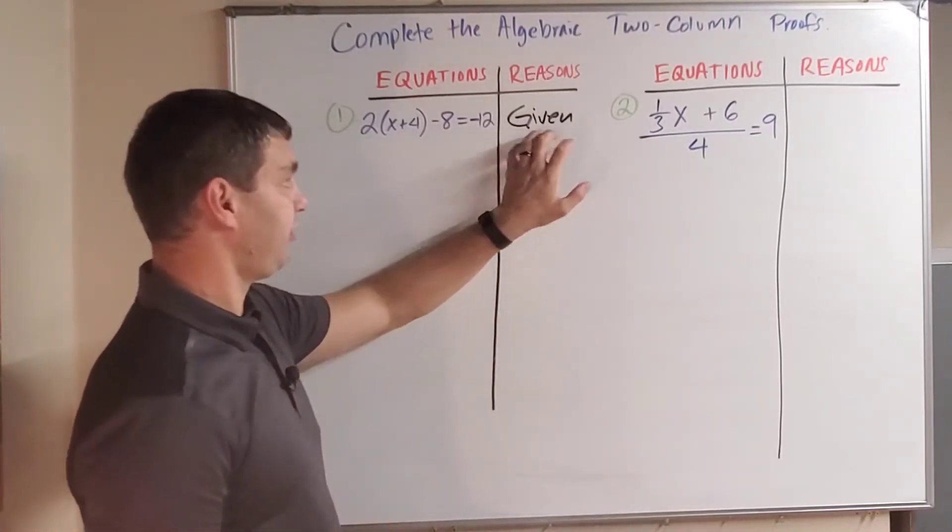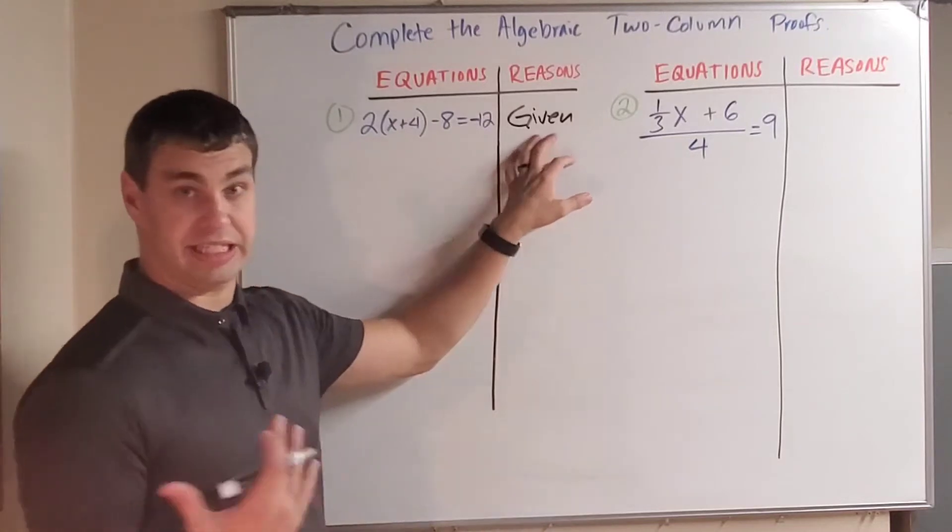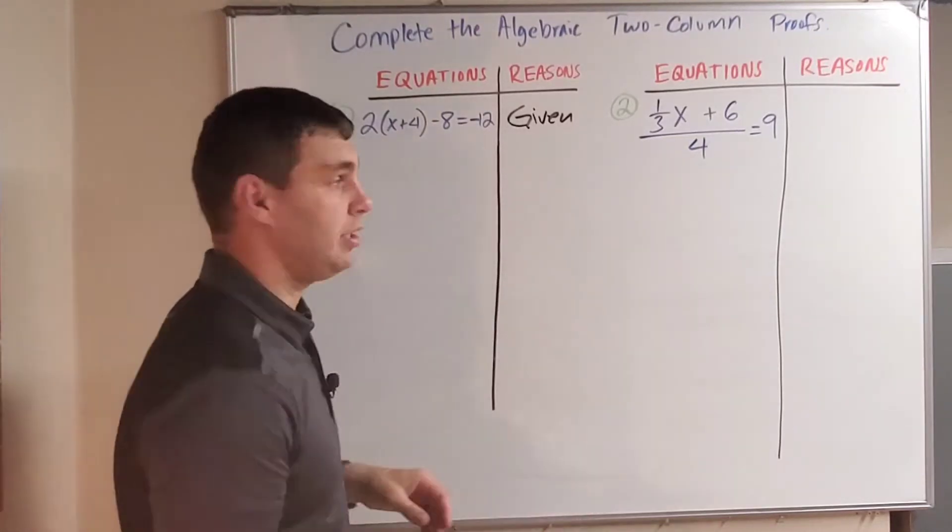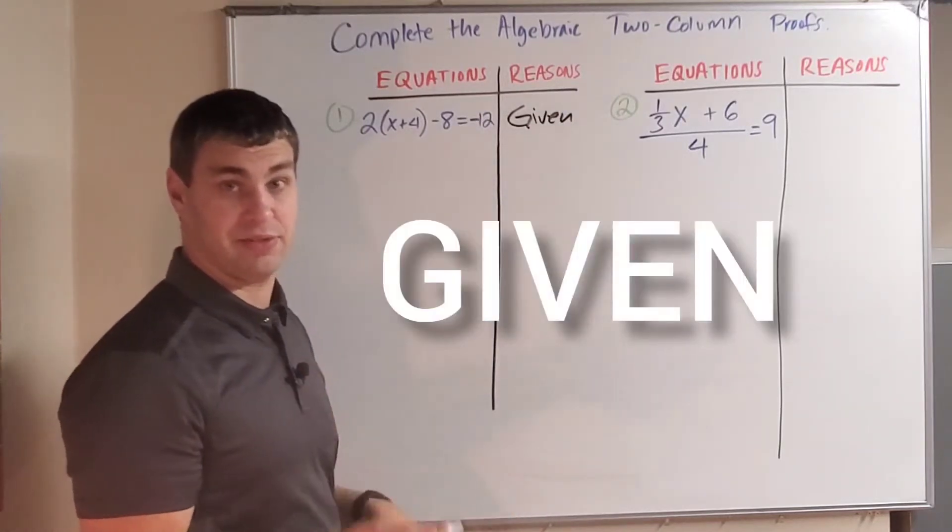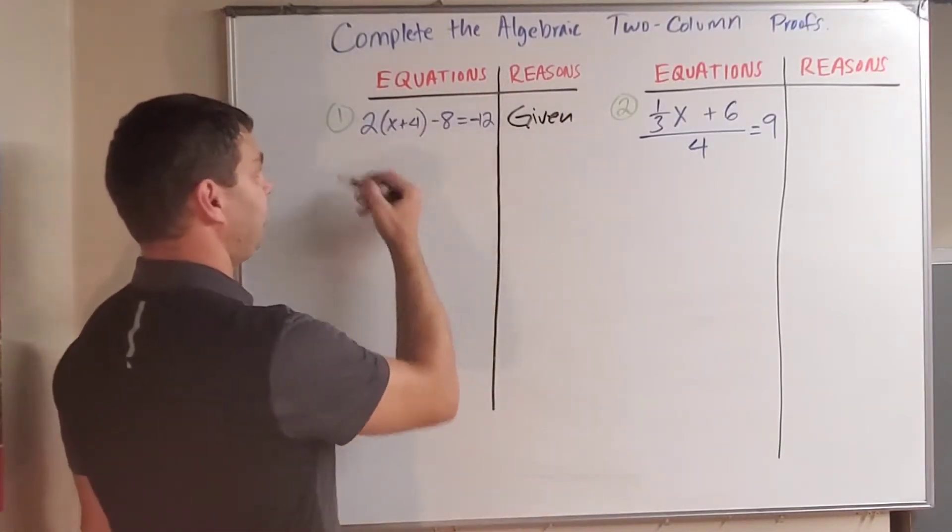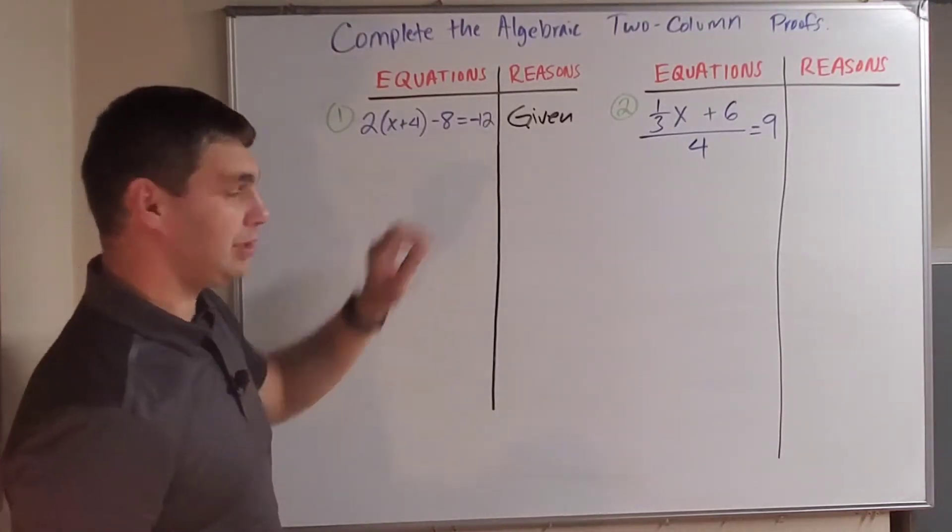So our first equation and our first reason are already given to us. In fact, the reason is called the given because they give it to us. Anytime you have a reason here, it's going to be a given for that first spot. So what did they give us? They gave us 2(x+4) - 8 = -12.